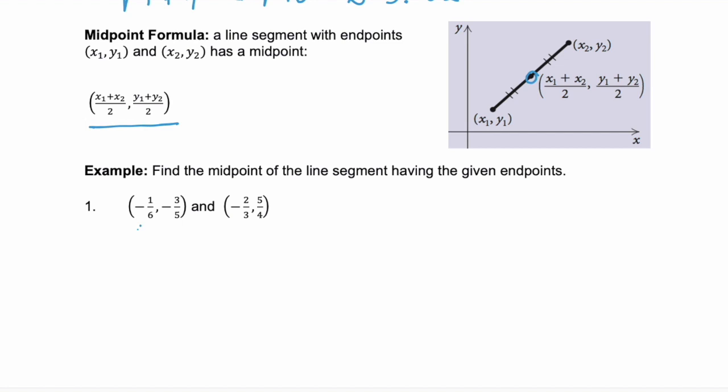Again, it doesn't matter which point is x1 and y1, just as long as you keep those together. So our x coordinate here is going to be negative 1/6 plus negative 2/3 divided by 2. And we're going to simplify that numerator first. And to do that, we need common denominators, which are going to be 6.